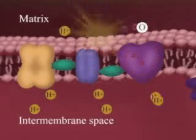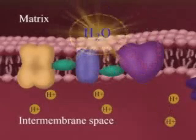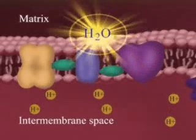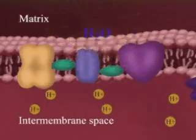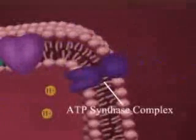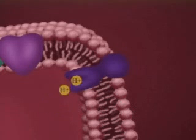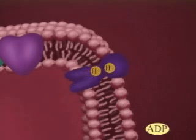Protons can diffuse back across the membrane, but only through channels created by the enzyme ATP synthase. This enzyme uses the energy of the diffusing protons to bind a phosphate group to ADP, producing ATP.